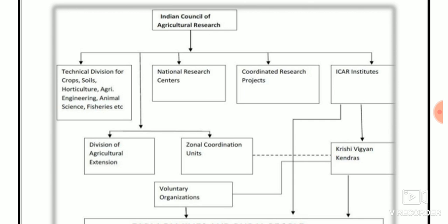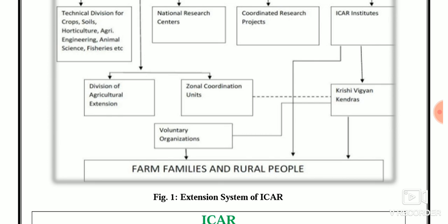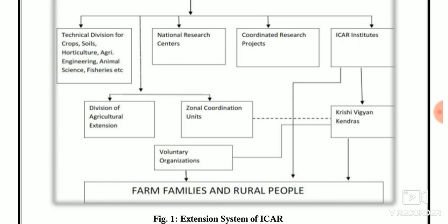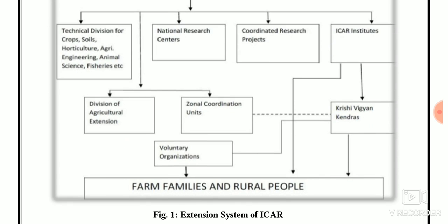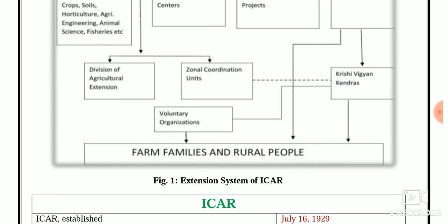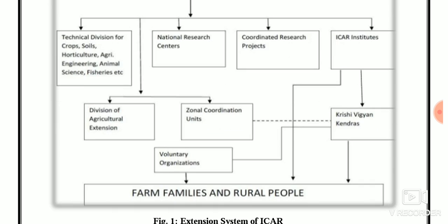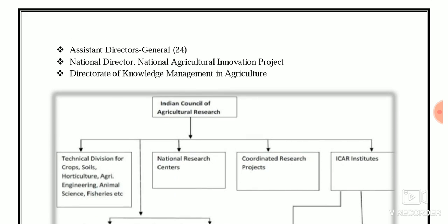Under ICAR, different bodies are situated: technical divisions for crops, soil, horticulture, agriculture engineering, animal science, fisheries, etc. There are also NRCs — National Research Centers — national research projects, ICAR institutes, Krishi Vigyan Kendras, associated voluntary organizations, and the Division of Agriculture Extension general coordination units. All these are functioning under the Indian Council of Agriculture Research for farm families, ultimately reaching rural people.